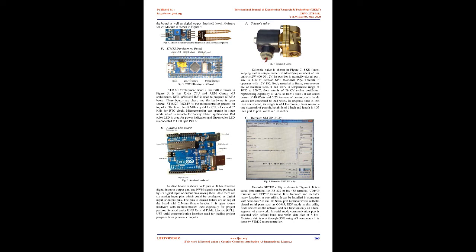The moisture sensor YL69 or HL69 identifies the amount of water present in soil by connecting it to Arduino. The moisture sensor has two hardware components: one is the electric board and the other is the probe with two copper pads that detect water content by calculating conductivity between them. The electric board has two analog (A0) and digital (D0) output signal pins. LEDs indicate power input to the board as well as the digital output threshold level. The moisture sensor module is shown in Figure 4.